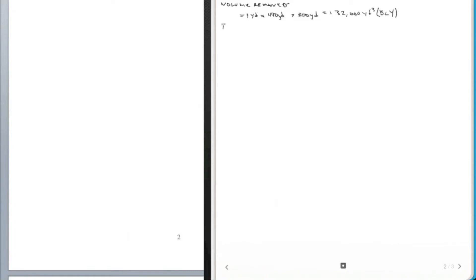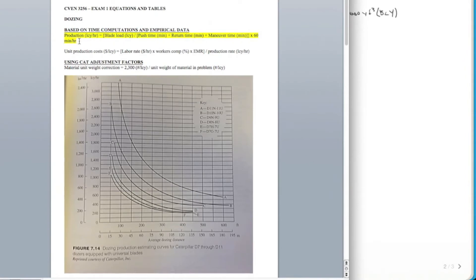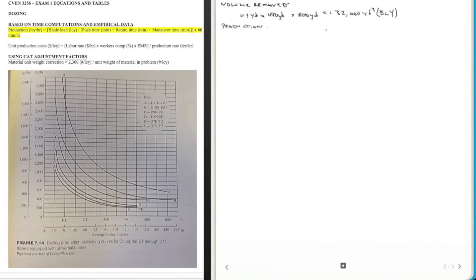The next thing is to get the production. Going back to the equation sheet that we got, you have a production equation here in loose cubic yards per hour of the blade load divided by push time, return time, maneuver time, times 60. That will give you loose cubic yards per hour. All these units are minutes. What we need to do then is get all of these variables. We need to get the blade load. That one was easy, it was only 7, it was given to us. But we do need to calculate push time.